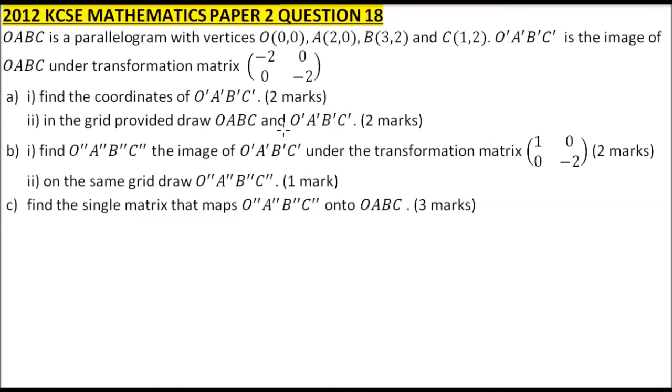This is 2012 KCSE paper 2, question number 18. We are told OABC is a parallelogram with vertices O(0,0), A(2,0), B(3,2), and C(1,2). O'A'B'C' is an image of OABC under transformation matrix minus 2, 0, 0, minus 2. Part A, roman number 1: find the coordinates of O', A', B', C'.